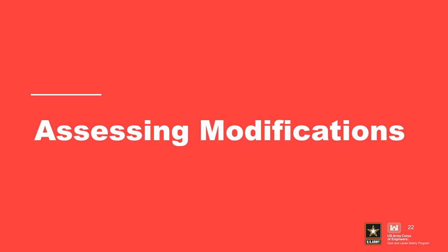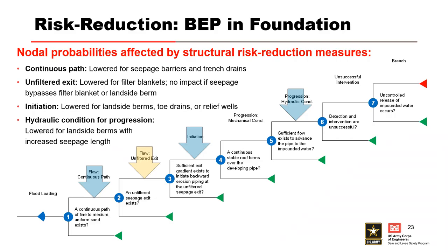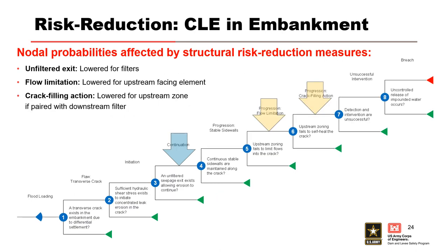Assessing modifications. The formulation of structural risk reduction measures to address potential failure modes will focus on one or more nodes of the event tree to reduce the likelihood of their occurrence. These are the nodes typically targeted for backward erosion piping. Structural risk reduction measures must either interrupt the continuous flow path, provide a filtered exit, or reduce hydraulic gradients. These are the nodes typically targeted for concentrated leak erosion in the embankment. Providing a filter as a defensive measure is the most effective structural risk reduction measure.